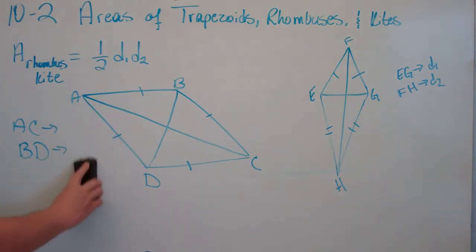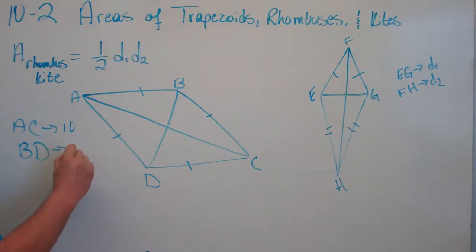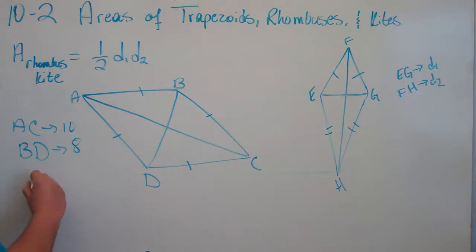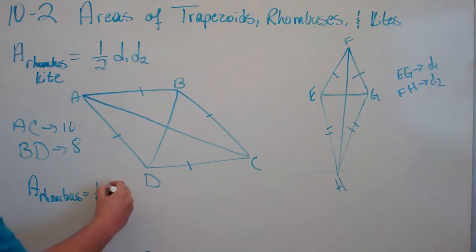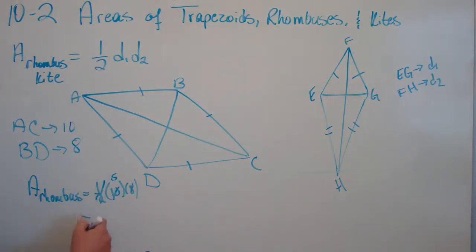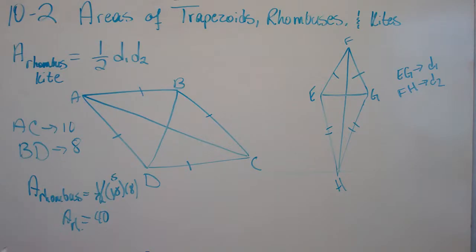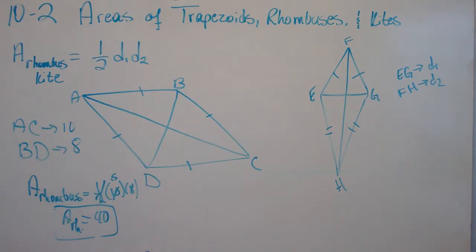Let's work a problem. Say AC has length 10 and BD has length 8. All we've got to do is plug that into our formula. The area of a rhombus equals one-half diagonal one times diagonal two. We can go ahead and half the 10 down to 5. 8 times 5 is 40. So the area of the rhombus is 40, because 10 times 8 is 80, divided by 2 is 40.